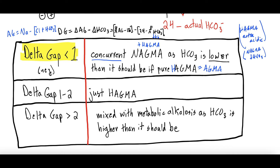If the delta gap is between one and two, that indicates a pure, simple high anion gap metabolic acidosis. This means the anion gap is fully explained by the change in bicarbonate, which is consistent with a pure HAGMA.